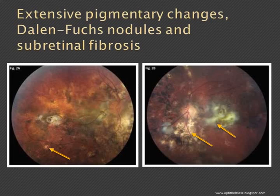In the macula you can see sub-retinal fibrosis, which is more extensive in the left eye. Another arrow in the left eye is pointing out depigmented areas.